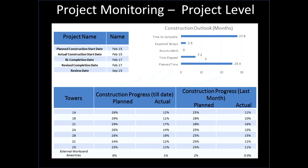This data then makes its way from the field level to the project level and can be used for project monitoring. You can see the construction outlook here, looking at various issues, expected delays, how much is the delay, accumulated time elapsed, and planned time — basic project details. For a project with several towers, the planned percentage complete is given alongside the actual percentage complete at the monitoring time. You can see most of it looks like it is behind. This percentage complete is a very important topic we will deal with towards the end of this lecture.